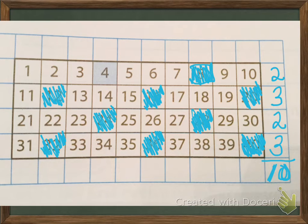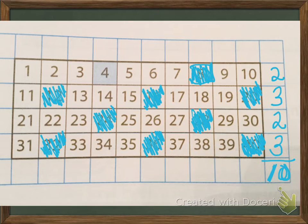Now, what patterns do you see in the arrangement of the blue squares? You might say there are 2 blue squares in the first row, 3 in the second, 2 in the third, and so on — and if we continued making a longer quilt, that pattern might continue. What pattern do you see in the numbers of the blue squares? The numbers of the blue squares are the multiples of 4. So now we're starting to connect Chapter 5 — factors, multiples, and now patterns.